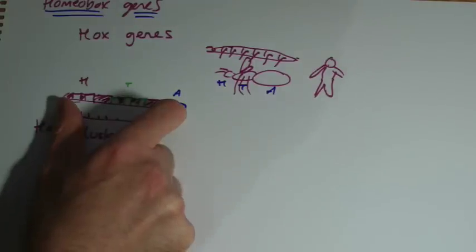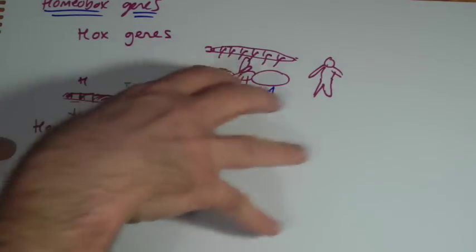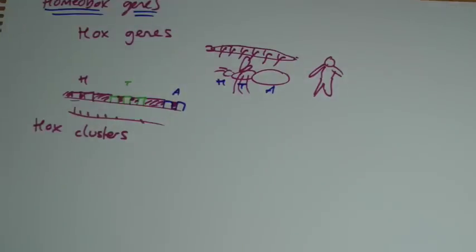Whereas in humans, vertebrates, four clusters. And humans have got a variation of between nine and eleven genes, whatever it is. So humans would have these clusters, and they're on specific chromosomes.